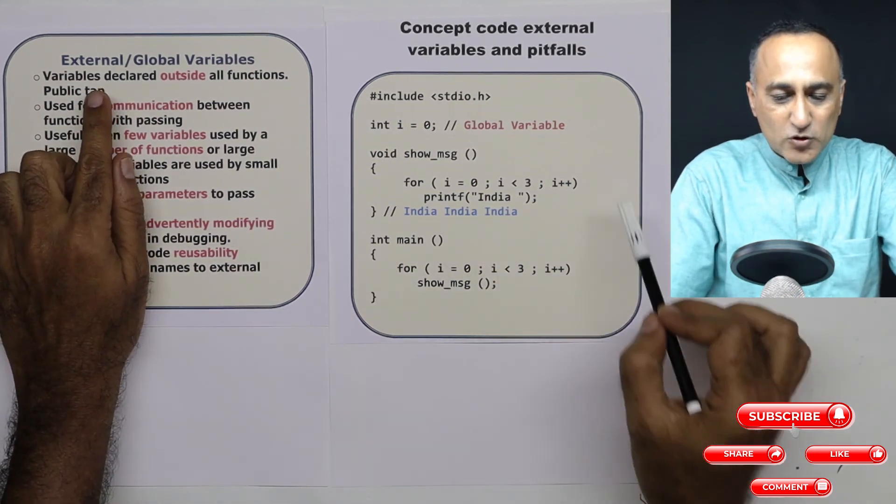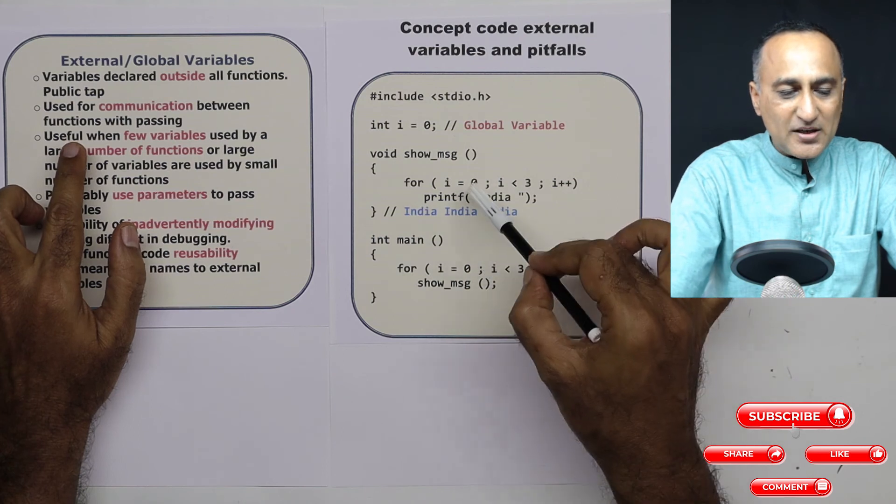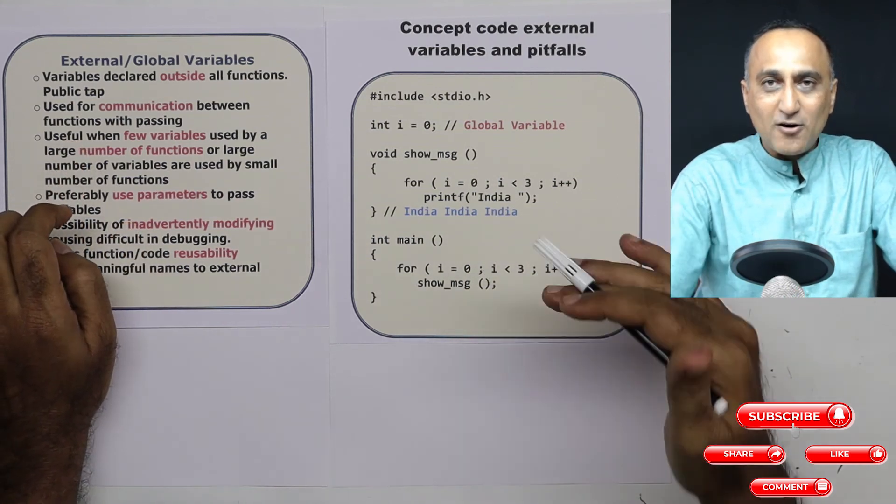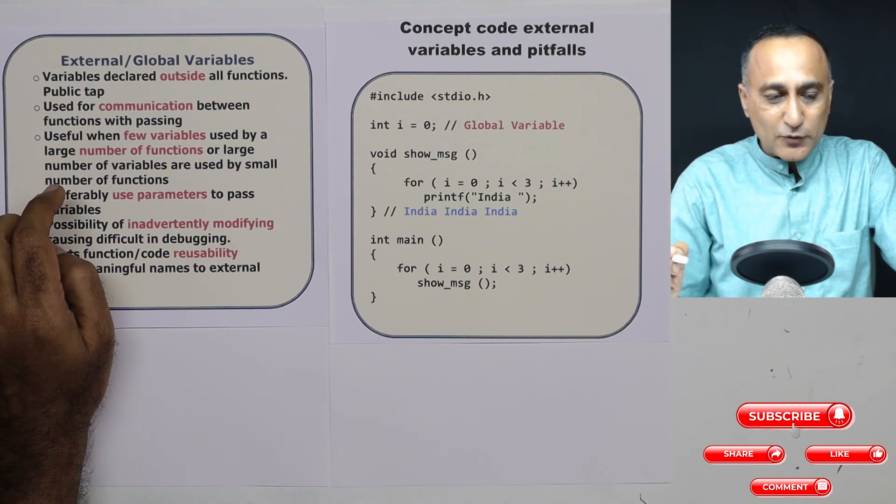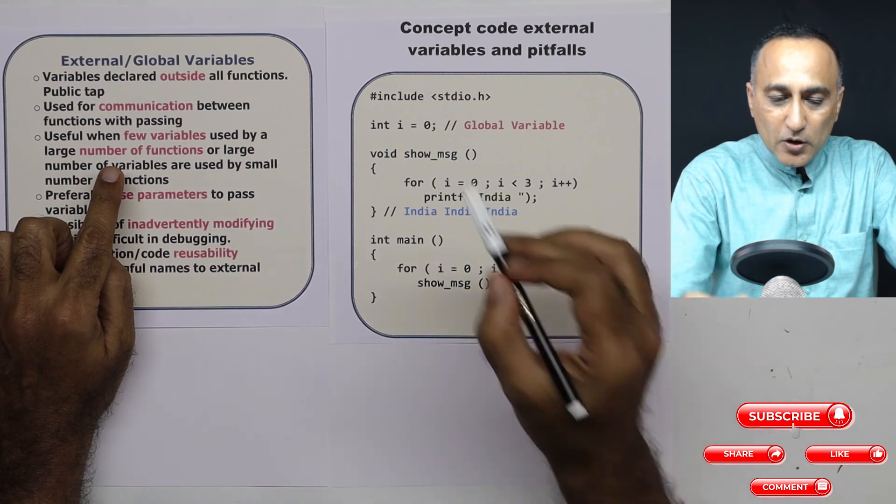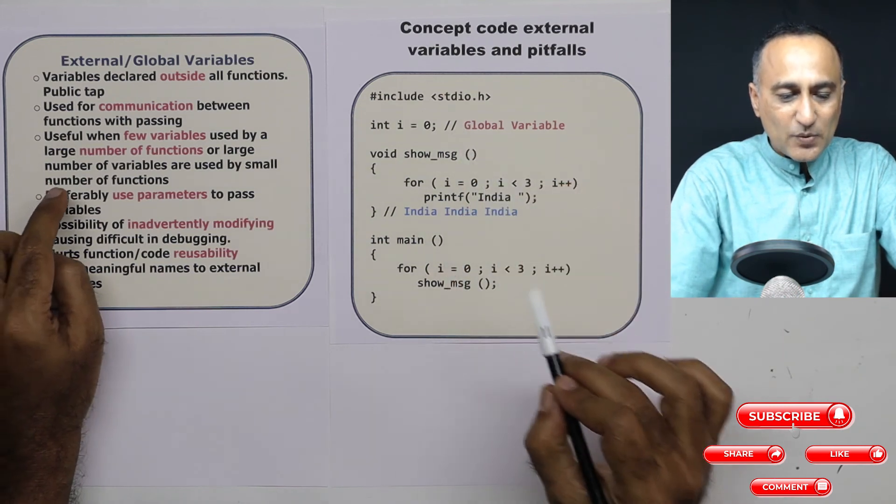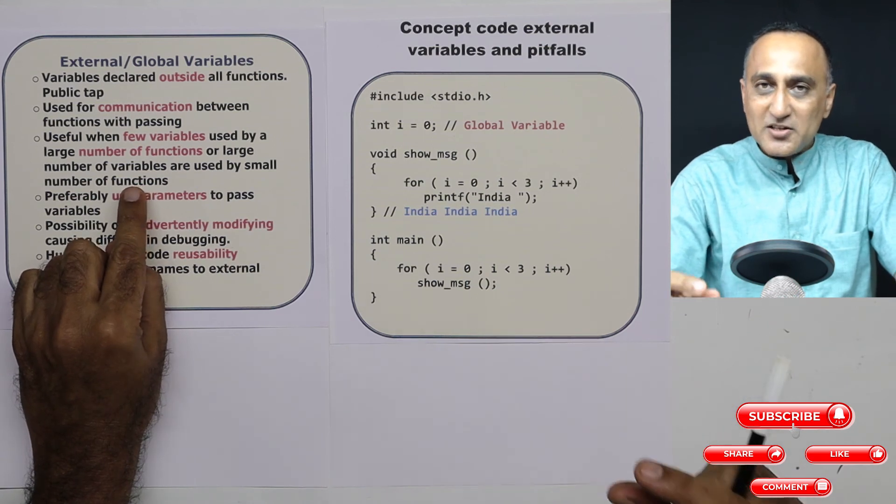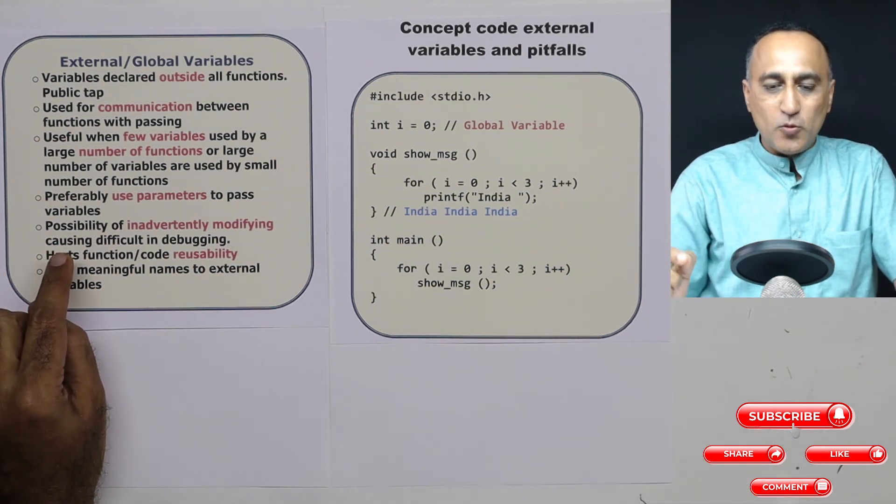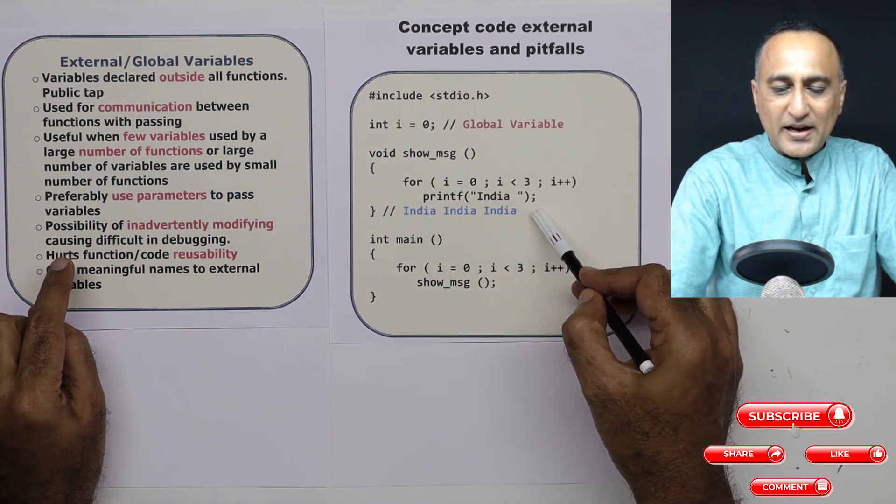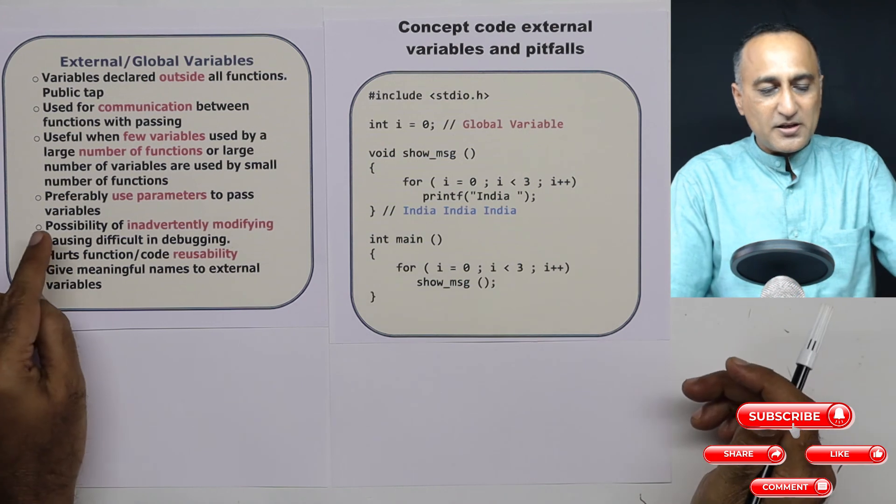So variables declared outside all functions are global variables. Global variables are used for communicating values between different functions without doing any passing of arguments. So I was able to use i here and here without doing any passing. Global variables are useful when you have very few global variables and a large number of functions using them, or you have a large number of variables which are used by a small set of functions. This is very important to understand. It is best avoided to use global variables because of the problems like this. I was expecting it to print nine times. It only printed three because the i was getting affected in this place and affecting here also. So you are better off using parameters to pass values.